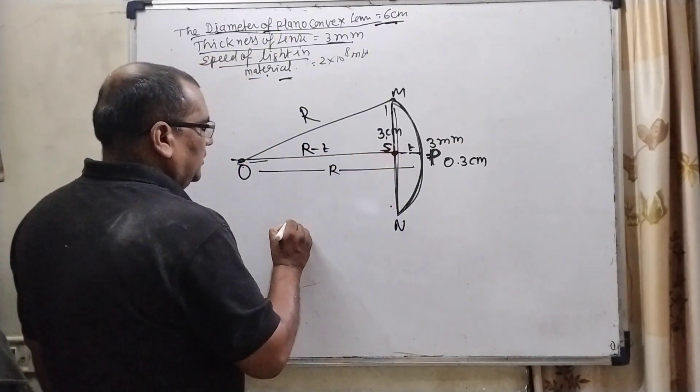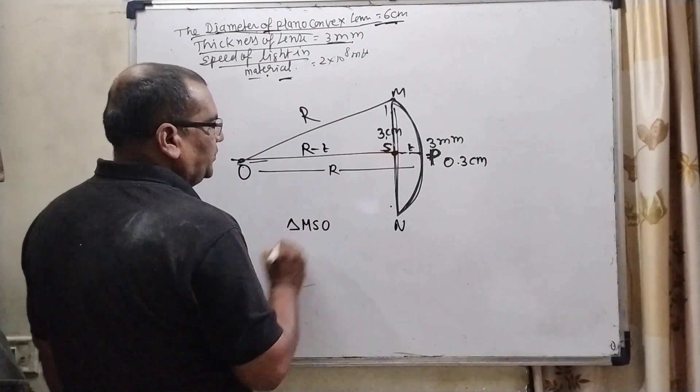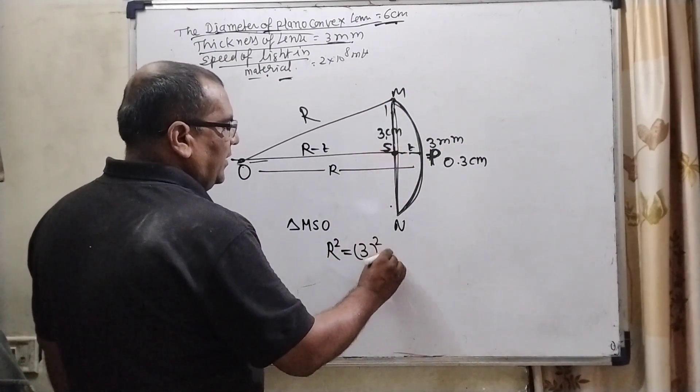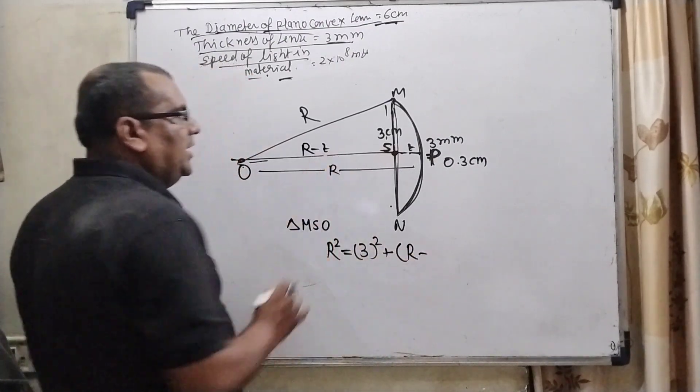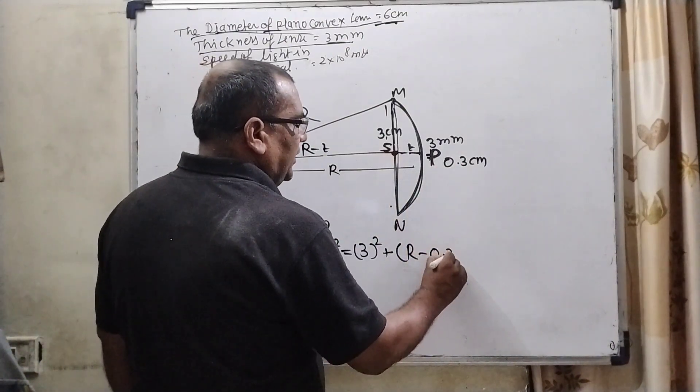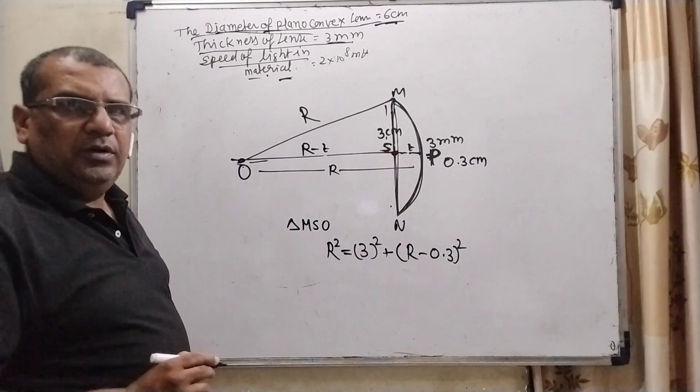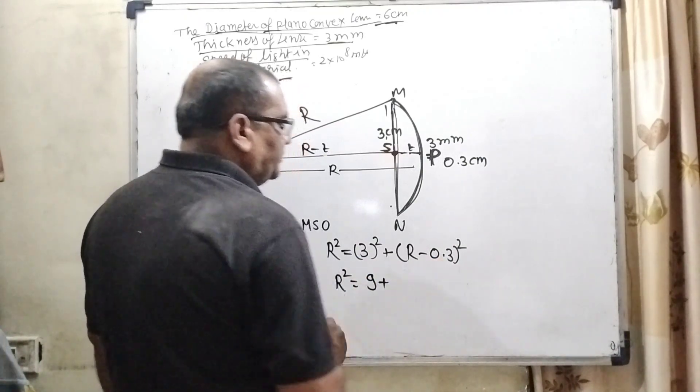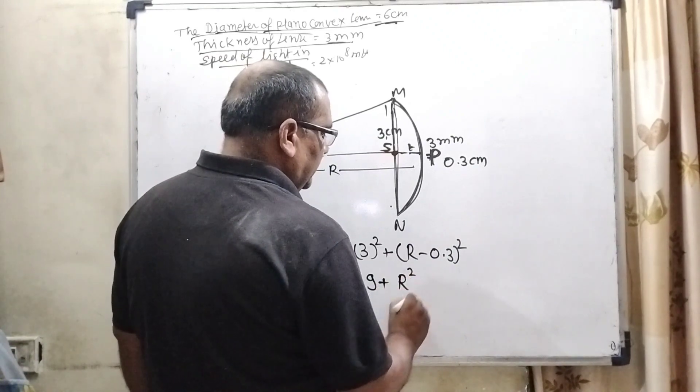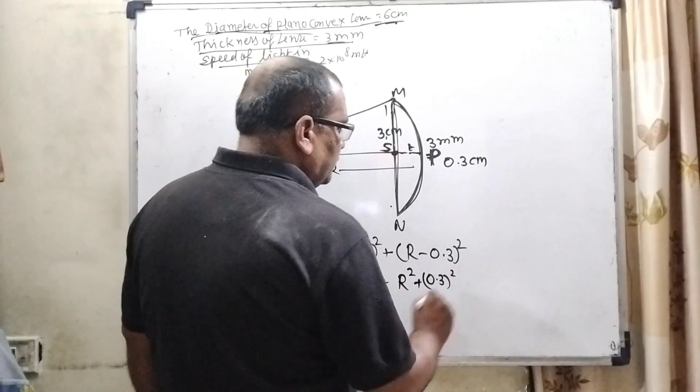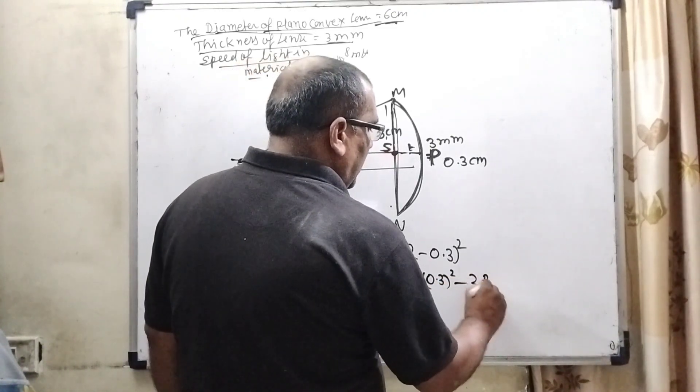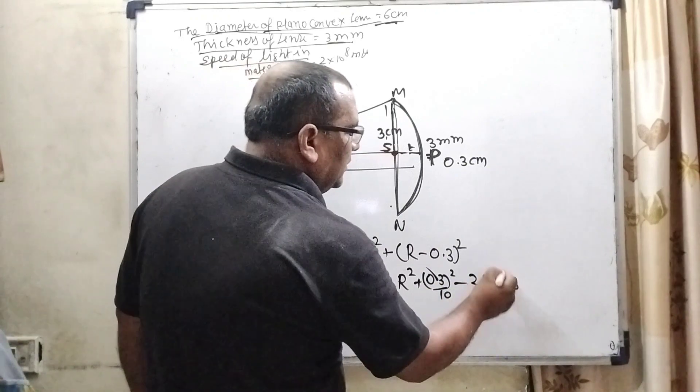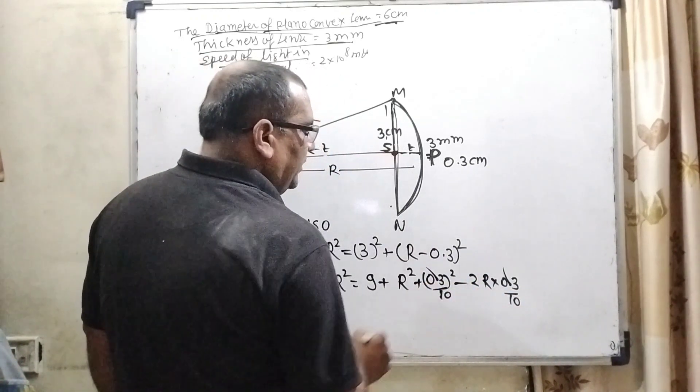Now by using Pythagoras theorem in triangle M, S, O, hypotenuse is R², here perpendicular is 3 cm². Here R and what is thickness? Thickness is given 0.3, so whole square. Now solving R² = 3² that is 9, by using identity (A-B)² = R² + 0.3² - 2R×0.3. This decimal is removed and put here 10.